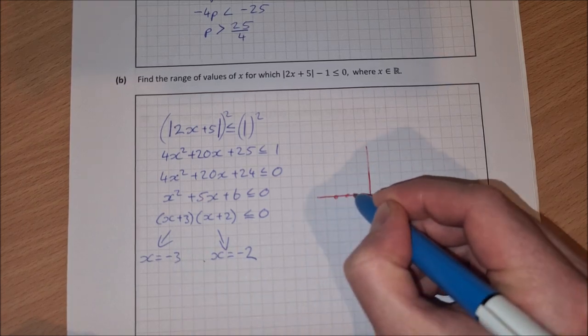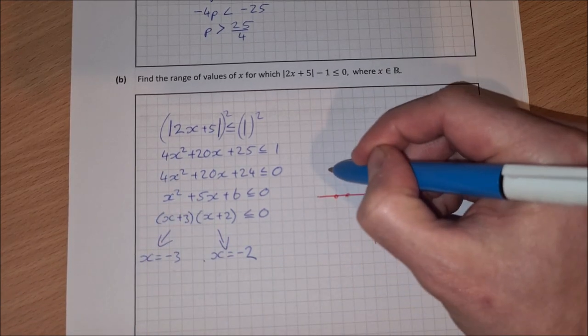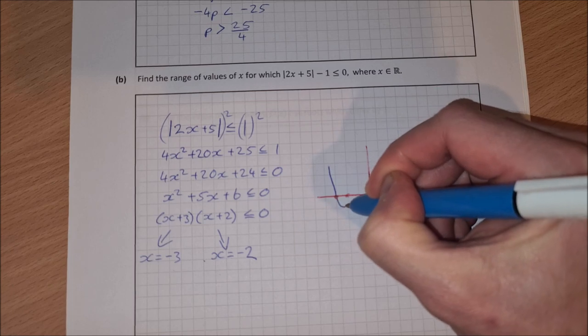It's a u shape because it's a positive x squared. So it looks something like this.